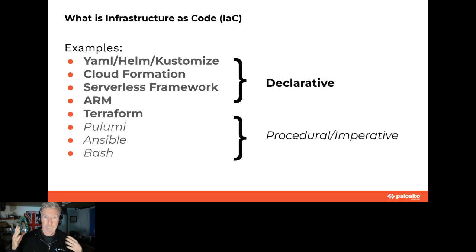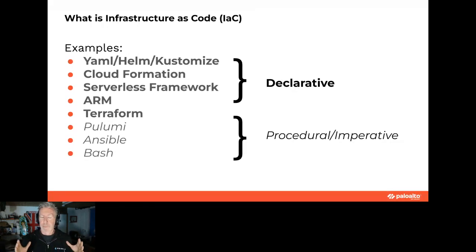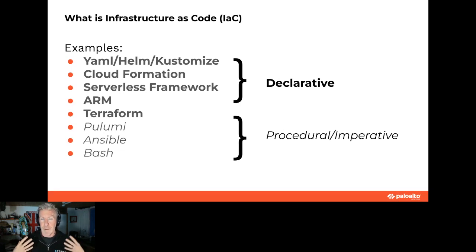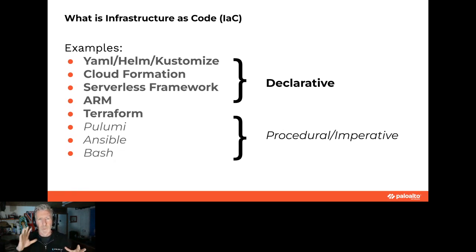There are also great alternatives to declarative methods — Ansible is still super popular, Bash is probably never going to go away, and newer exciting ones like Pulumi that leverage languages we're really familiar with like TypeScript to create infrastructure as code. These are all valid and cool.